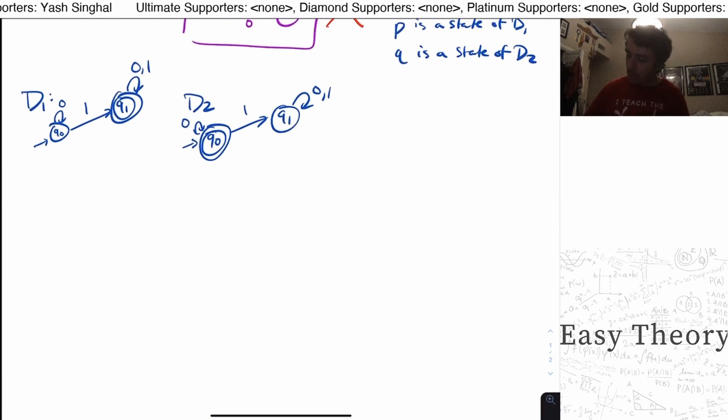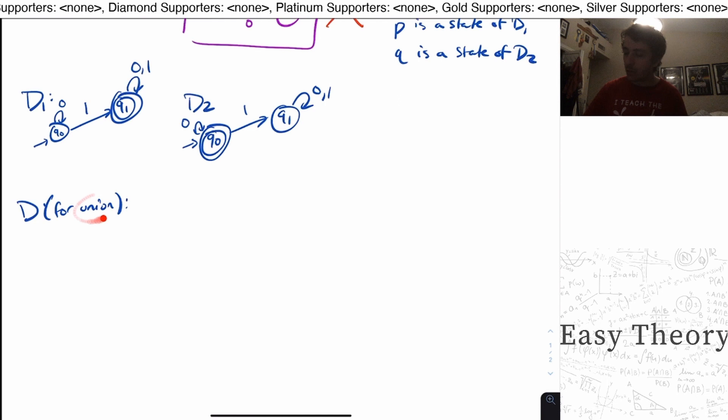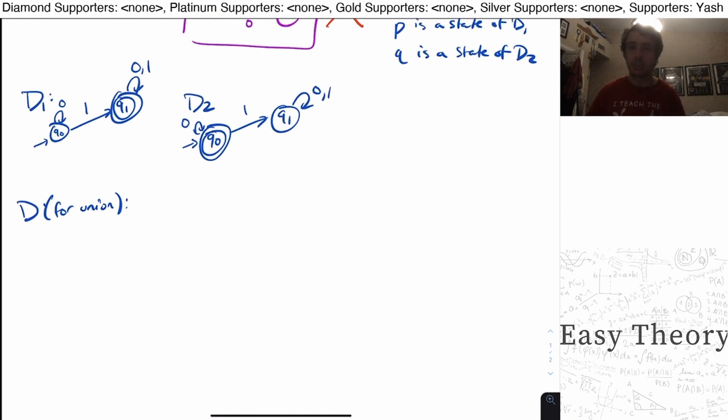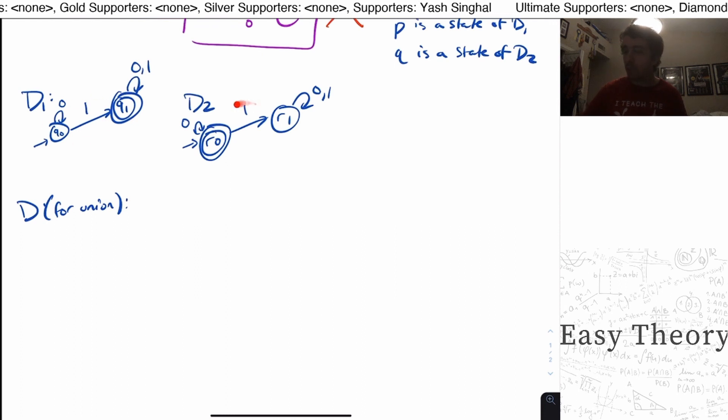So if we look at the product DFA D, let's say for union here. Whether or not it's for union or intersection or whatever, that's just changing what the final states are. But otherwise, the product DFA is exactly the same. And also what I'm going to do is I'm going to rename these states to be R0 and R1, to make it clear when I'm referring to one machine versus the other one.